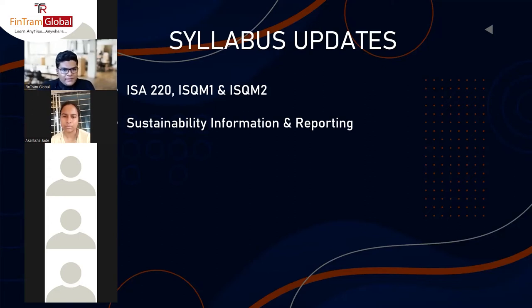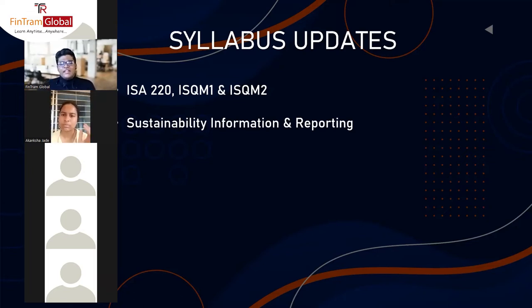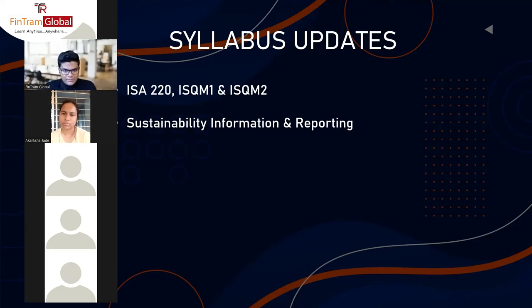Moving on to syllabus updates: ISA 220 has been introduced into the syllabus, as well as ISQM1 and ISQM2. Secondly, sustainability information and reporting has been introduced to the syllabus. This is an area most students will find very difficult, because sustainability information is similar to what we do for KPIs — it's all in relation to non-financial aspects like CO2 emissions.